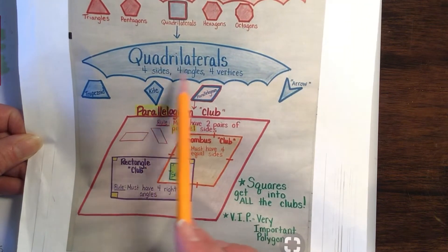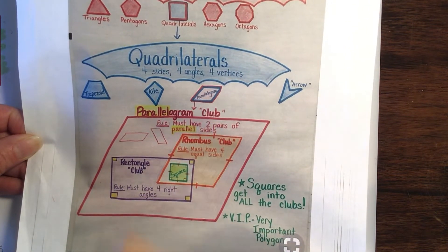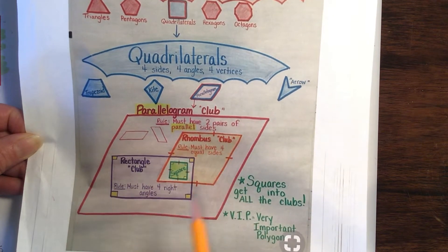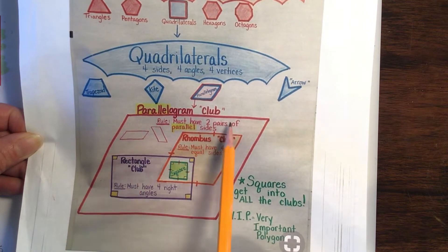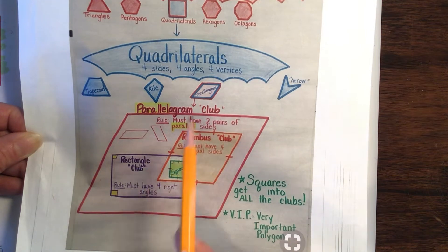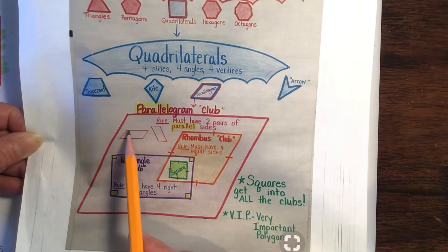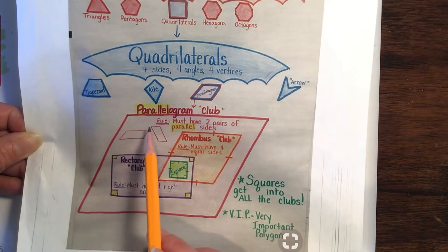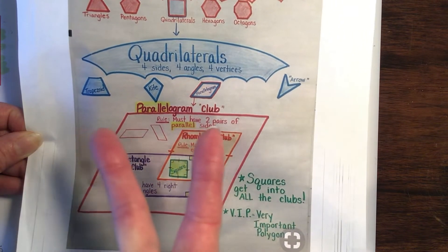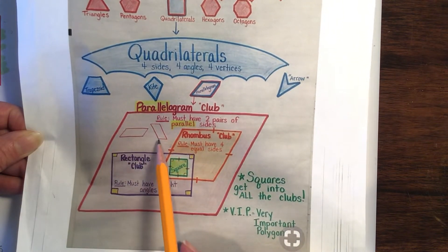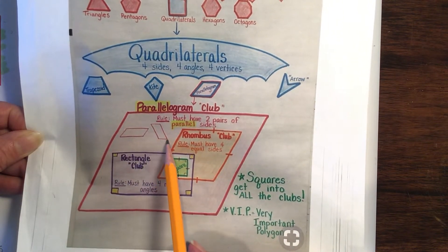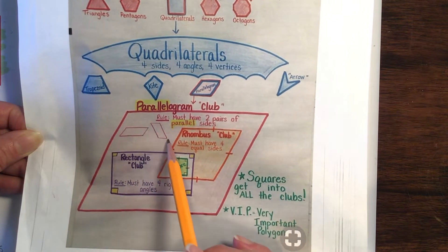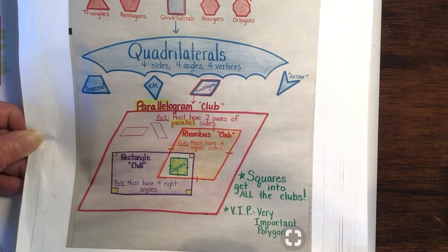We are going to be talking about quadrilaterals, specifically parallelograms. To be in the parallelogram club, they have to have two pairs of parallel sides. So let's look right here — here's a side that's parallel, two sides, and then here's two sides that are parallel. So there's two pairs. Same with this one: that end is parallel with that end, this side is parallel with that side.